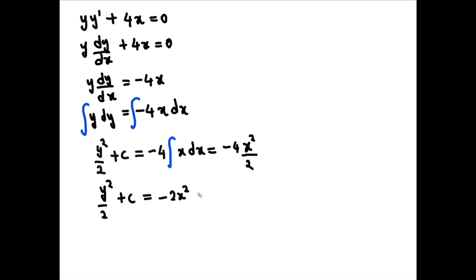Now we can multiply again, multiply through the whole thing with 2. So we get y squared plus... We could write this as just 2c, but 2 times some constant is just another constant. So we'll leave this as plus c minus minus 4x squared.